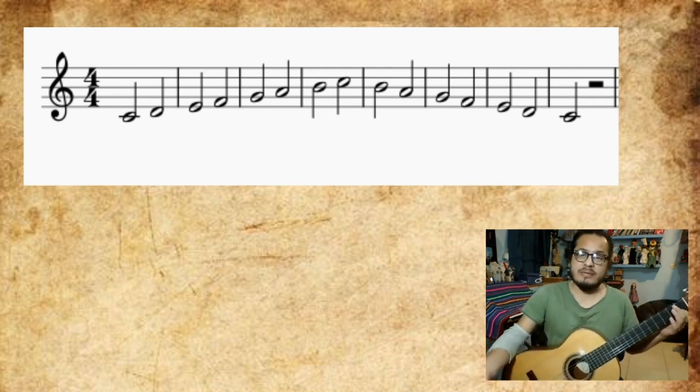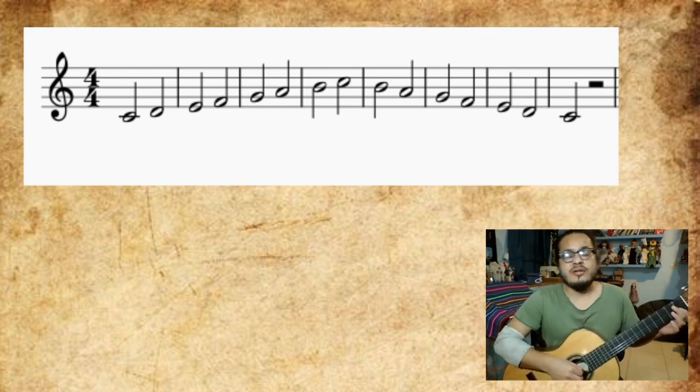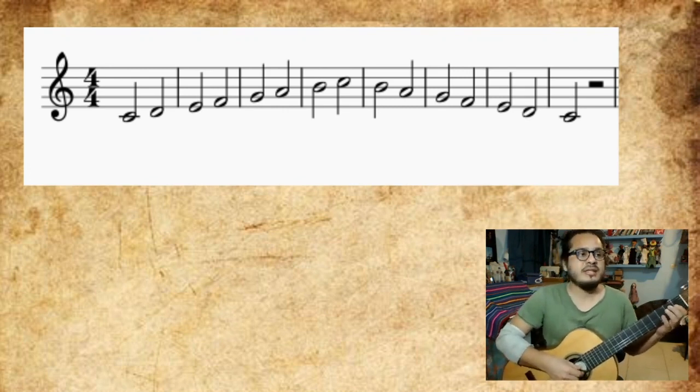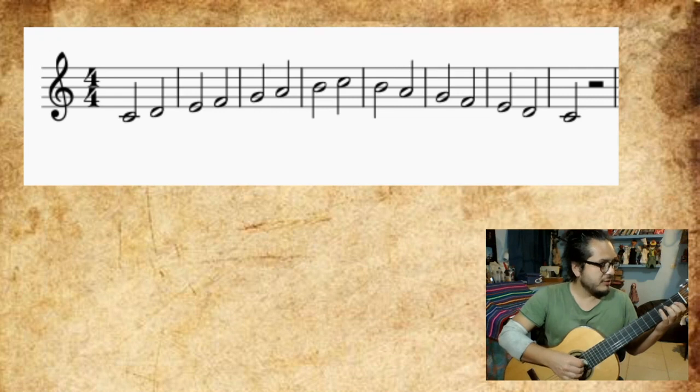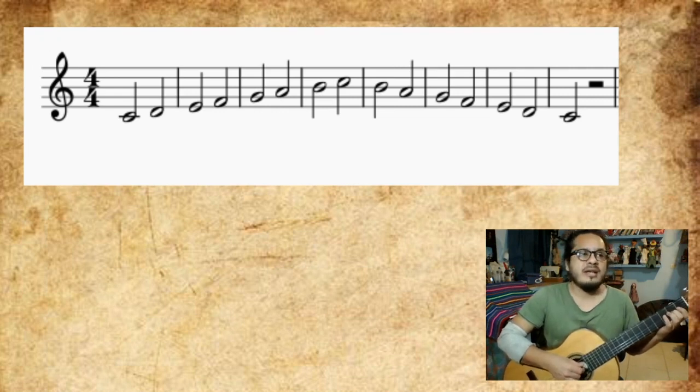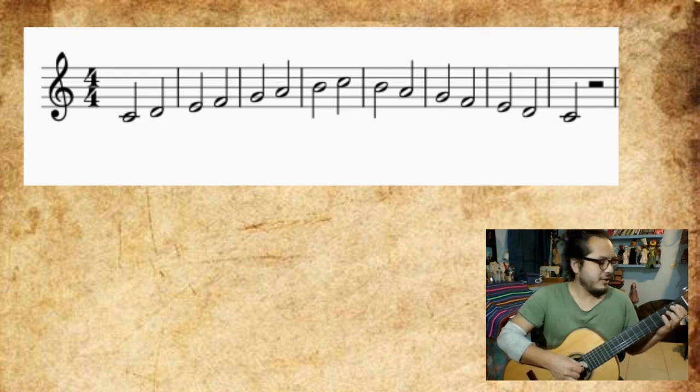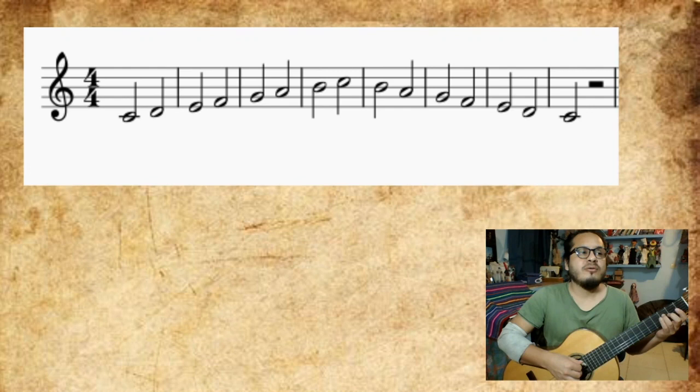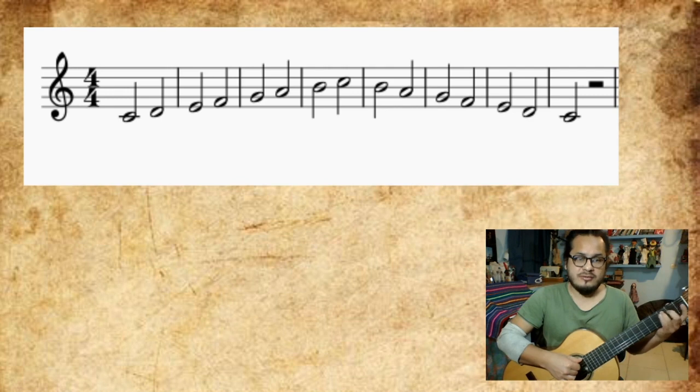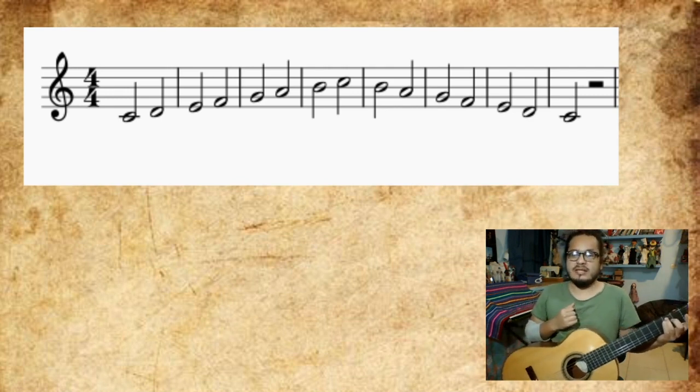Luego vamos a voltar para atrás con las notas. Tenemos Do. Luego tenemos Si, que es la segunda cuerda solta. La, que es la tercera cuerda casa dos. Sol, tercera cuerda solta. Fa, cuarta cuerda casa tres. Mi, cuarta cuerda casa dos. Re, cuarta cuerda solta. Y Do, quinta cuerda casa tres.